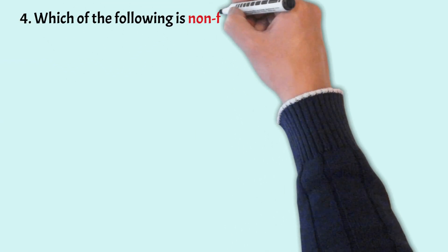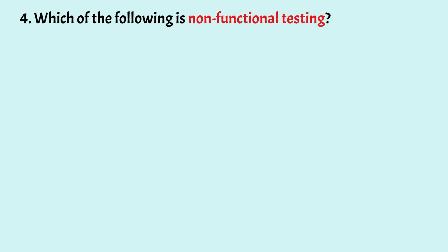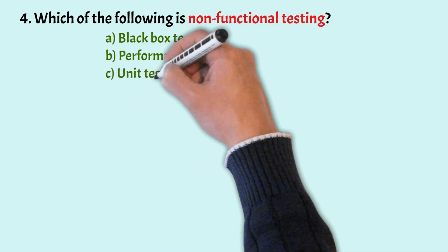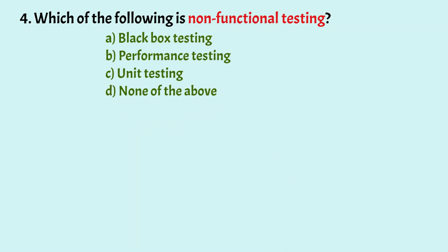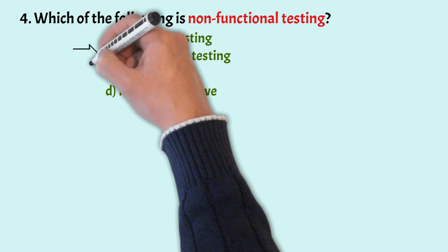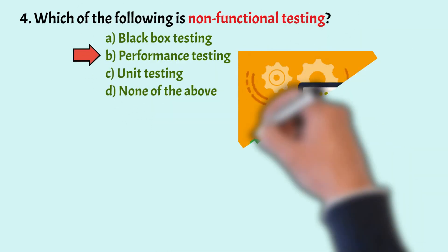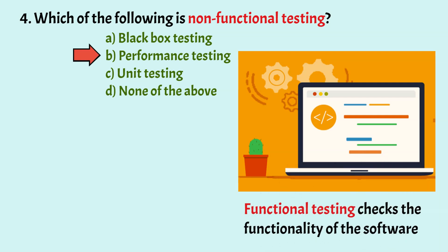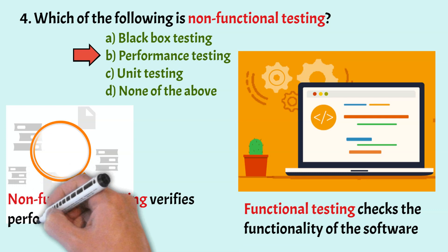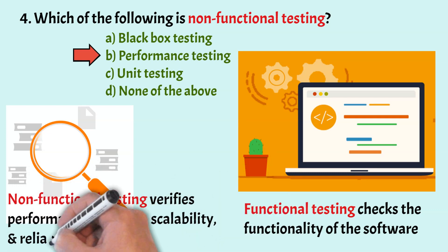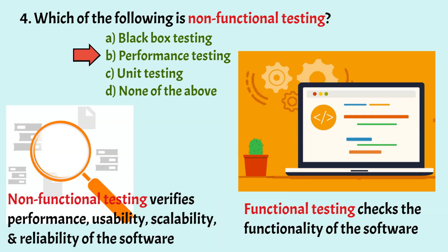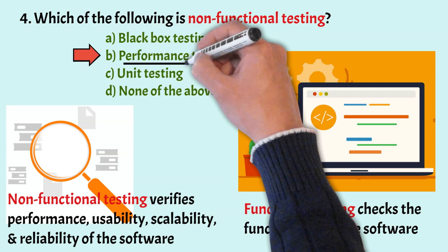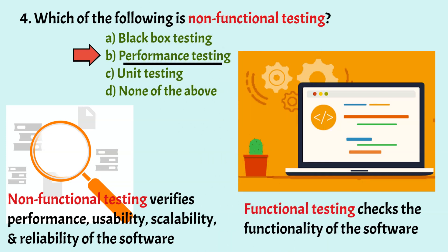Next question: Which of the following is Non-Functional Testing? Options: Black Box Testing, Performance Testing, Unit Testing, and None of the above. The correct option is Option B, Performance Testing. Functional Testing checks the functionality of software, whereas Non-Functional Testing verifies performance, usability, scalability, and reliability. Performance Testing is a Non-Functional Testing which verifies performance of software under the expected workload.